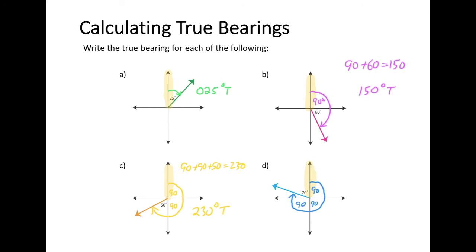An alternative would be to start at 360 and subtract 70 degrees, which also gets us to the true bearing angle. 360 minus 70 equals 290, so the true bearing is 290°T. Those are some examples of how to measure and write answers using true bearings.